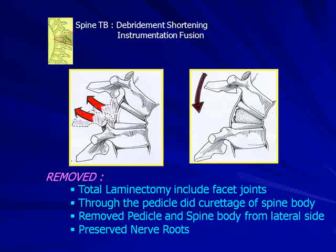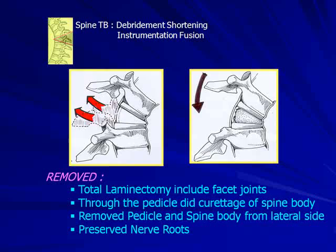In the shortening procedure, we do total laminectomy from the back and also remove the facet joint. Through the pedicle, we perform a core osteotomy on the vertebral body, remove all the pedicle from the lateral side, and preserve the nerve root. Then we place pedicle screws above the lesion and sub-laminar wires. With the cantilever mechanism, we perform shortening and compression, then place another screw below the lesion.